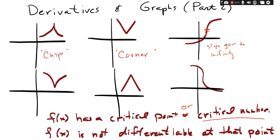Part two: what happens when the derivative doesn't exist? The first case is called a cusp — spelled C-U-S-P. On the left side the slope goes to positive infinity, then jumps to negative infinity. The opposite cusp goes from negative infinity up to positive infinity right at a certain point.